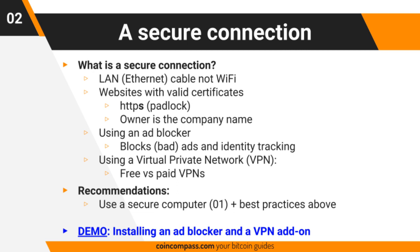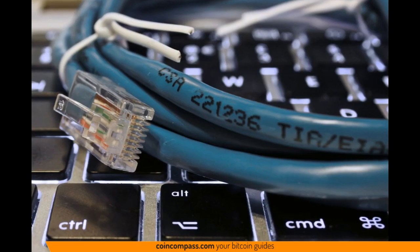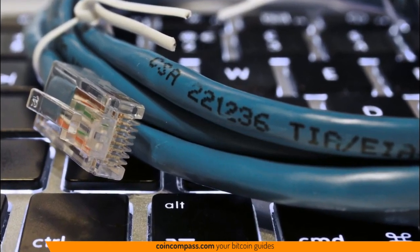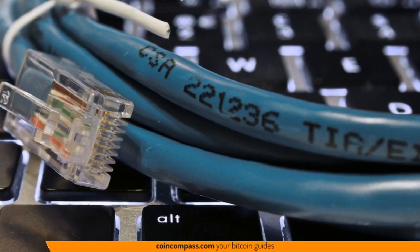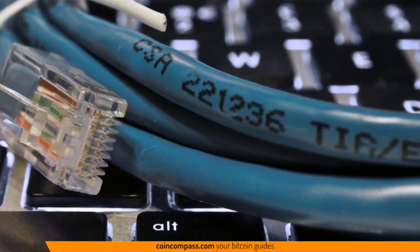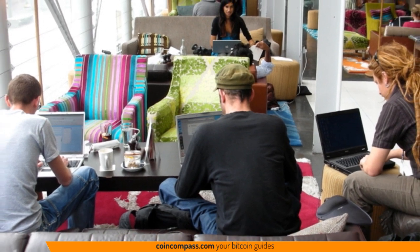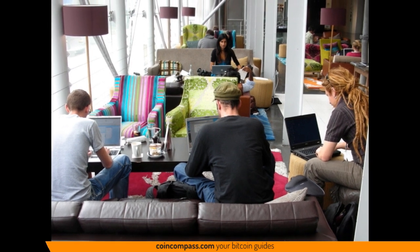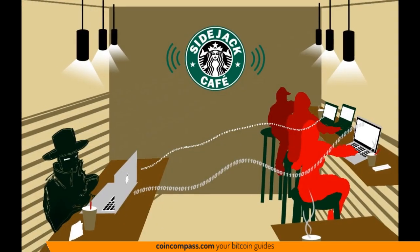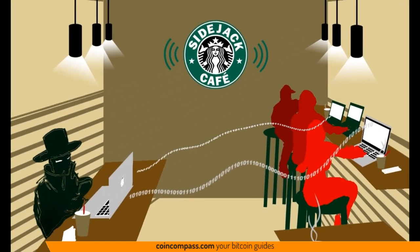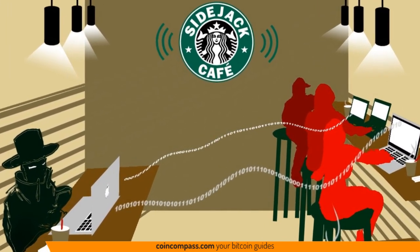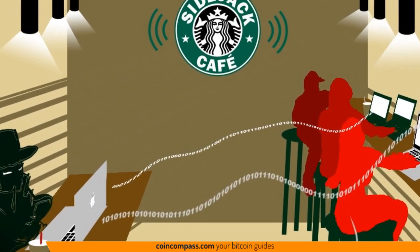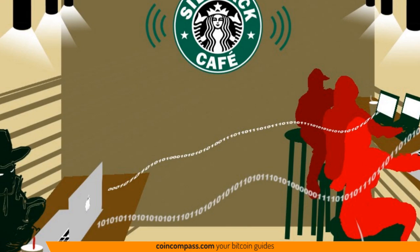So what is a secure connection? Firstly, it's using a LAN — sometimes called Ethernet or network cable — and certainly not using Wi-Fi. Here's a typical network cable; they can be black, grey, or different colors, but they're bigger than a telephone cable. Wi-Fi is super convenient, but because you're connected to a remote device, anyone else connected to that device can actually intercept, change, or do something malicious to every single piece of data being sent and received from your device.